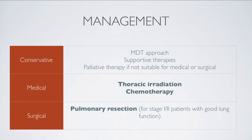The two main modalities of medical management are radiotherapy or thoracic irradiation and chemotherapy. For some stages of lung cancer, particularly stages 1 and 2 non-small cell lung cancers where patients have good lung function, surgical approaches may be taken. These are generally called pulmonary resections. Remember that often different techniques from different modalities are used together as an overall treatment strategy, which will depend upon the stage of the lung cancer and also the general condition of the patient.